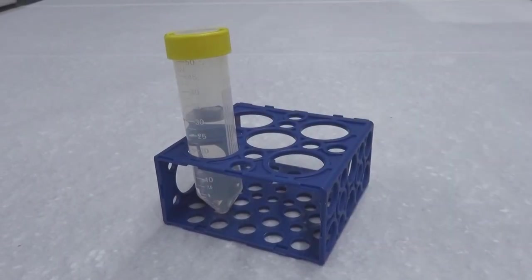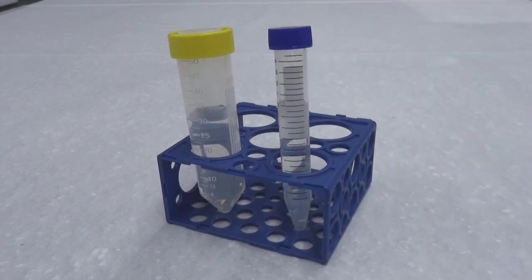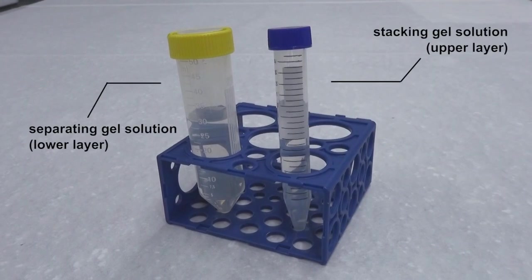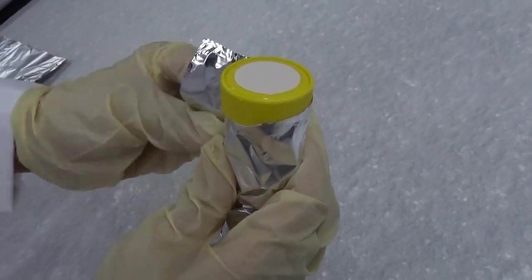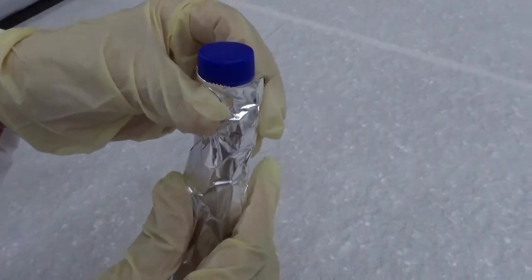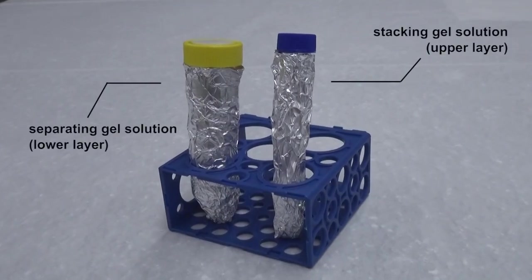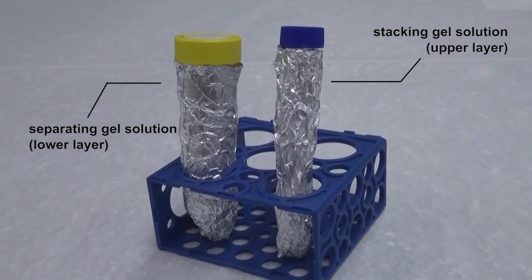Please follow the laboratory instruction to prepare separating gel solution, lower layer, and stacking gel solution, upper layer. Do not add the catalyst TEMED and the free radical provider APS at this moment to avoid initiating the reaction prematurely. Cover both gel solutions with aluminum foil to avoid light. Label both tubes and keep them at room temperature for use.